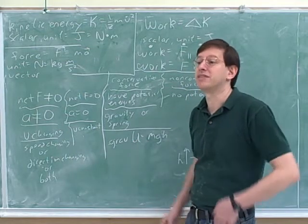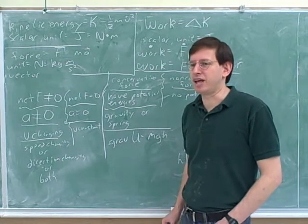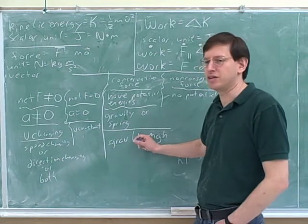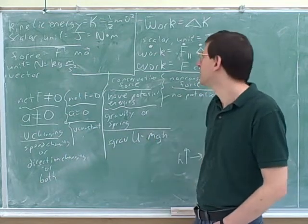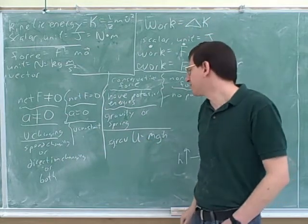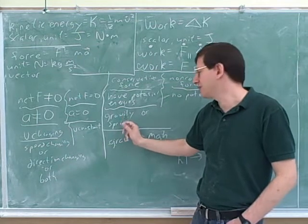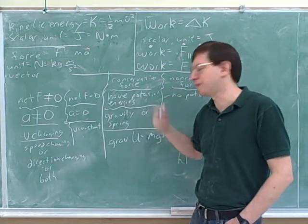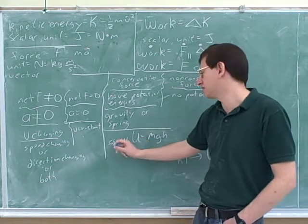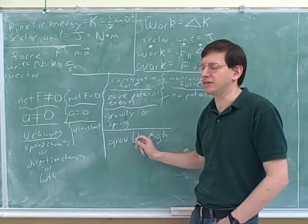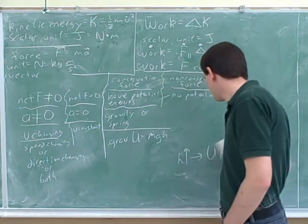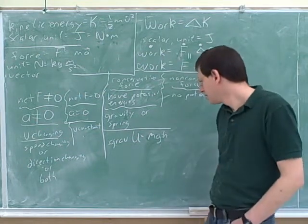P has already been used for other things — uppercase P is used for power — so people tend to use capital U for potential energy and capital K for kinetic energy. There are different types of potential energy: gravitational potential energy, spring potential energy, and next semester you'll learn about electrical potential energy. So this U with a g subscript stands for gravitational potential energy, which is the energy that comes from the weight force.